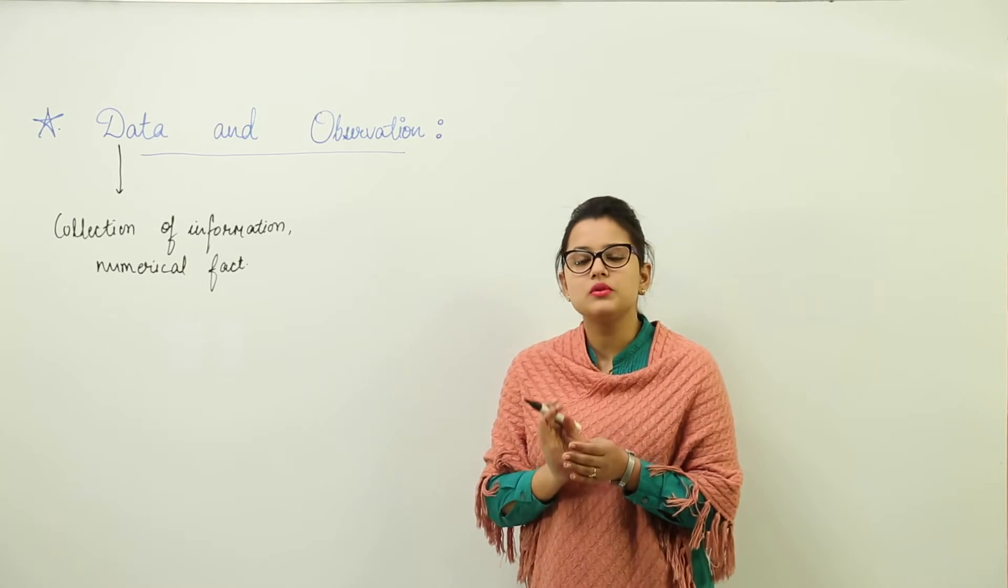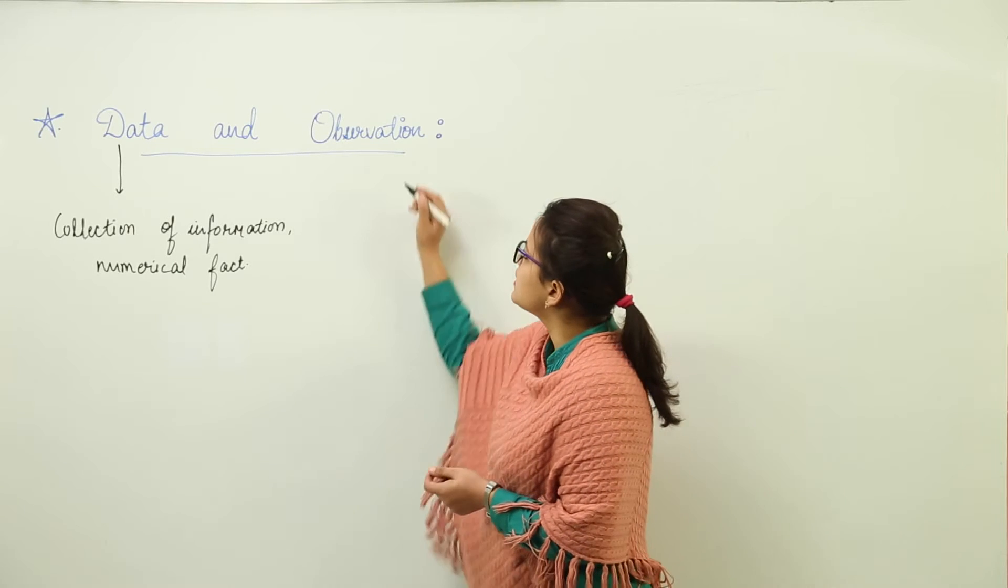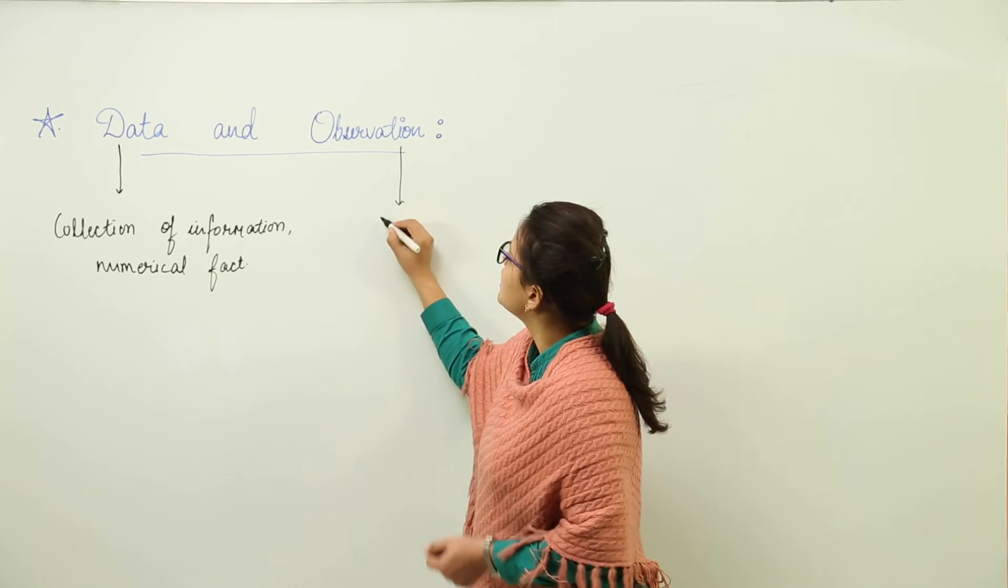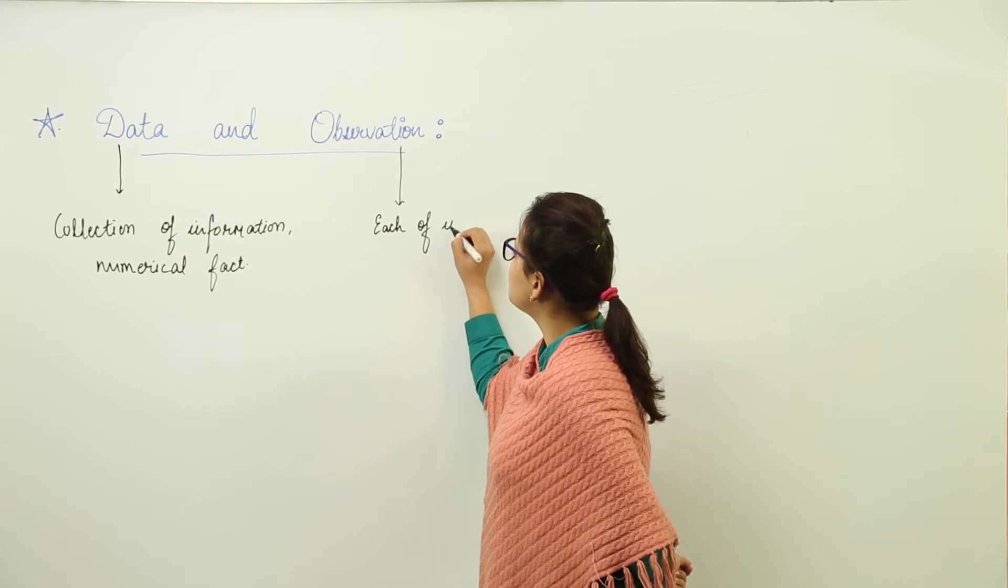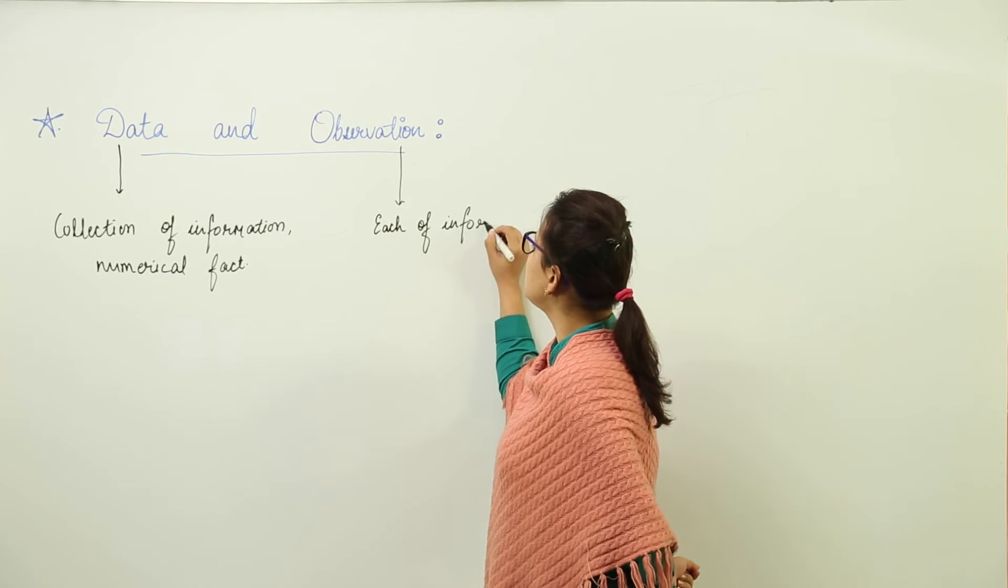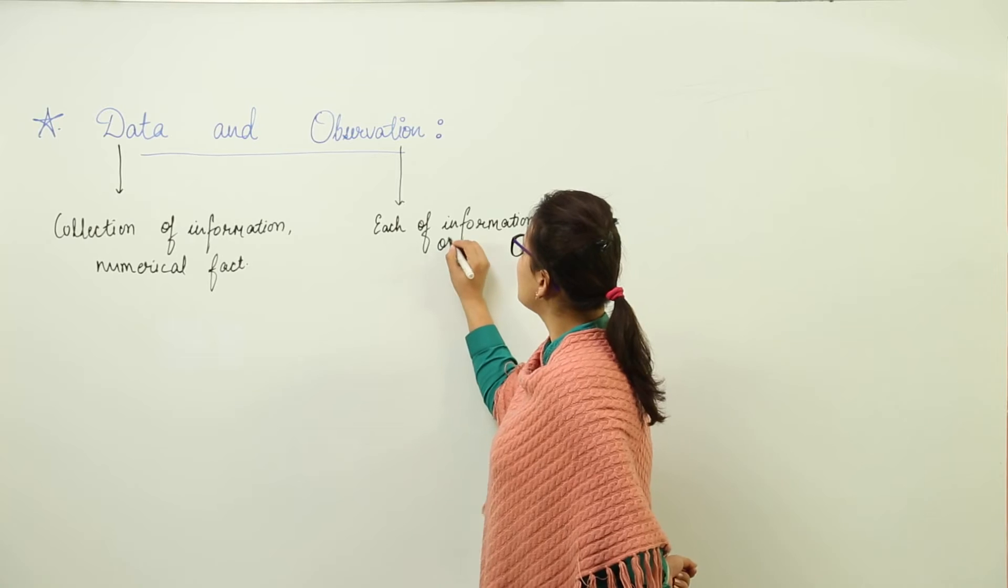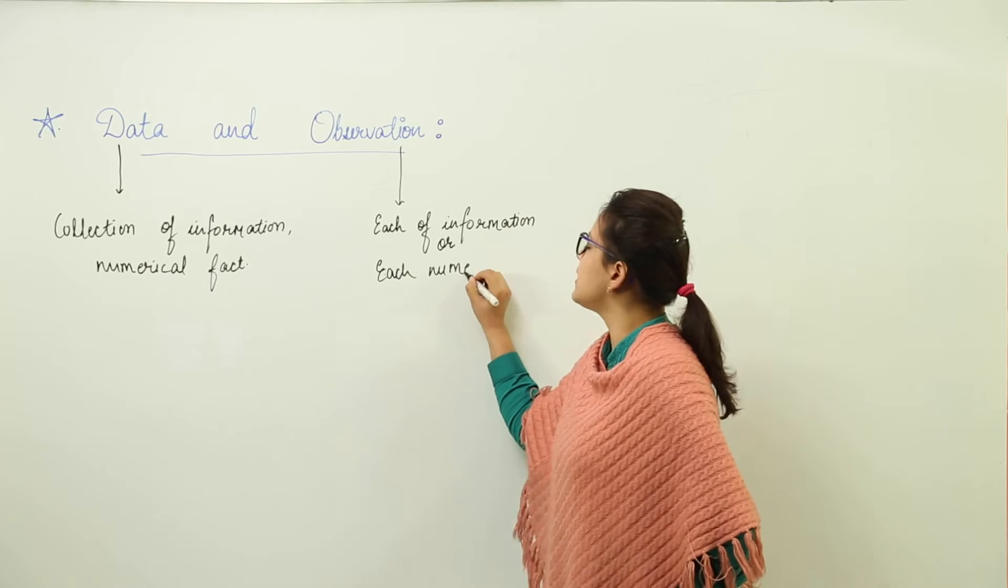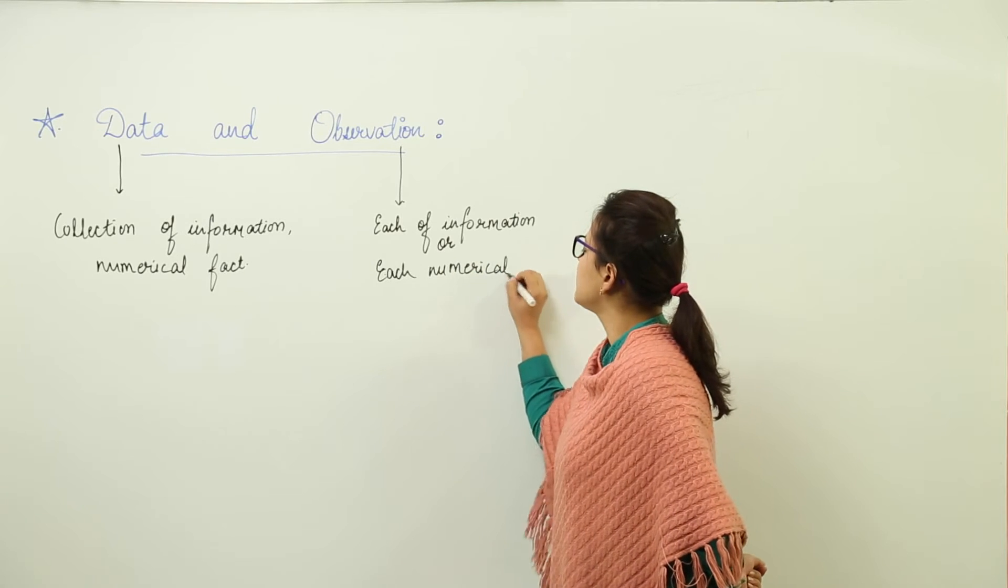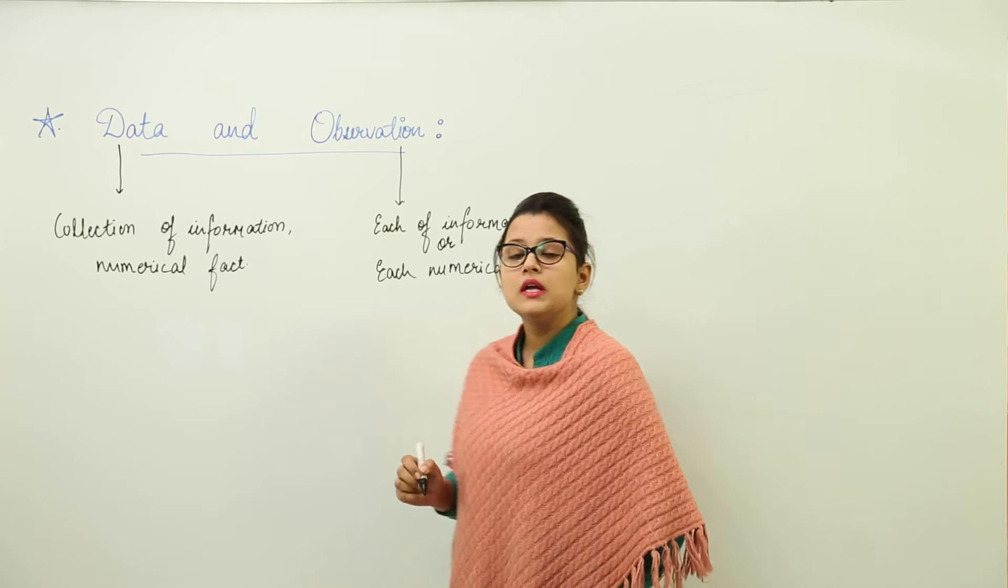Then what is observation? The collection of various values together is known as data, but observation is each of the information, or you can say each of the numerical fact. So if I write, each of the information or each numerical fact, that would refer to as my observation.